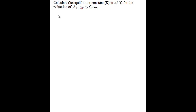you need to know this relationship: that the standard cell potential at 25 degrees Celsius is equal to 0.0592 divided by N, which is the number of moles of electrons transferred in the redox reaction, multiplied by the log of the equilibrium constant,